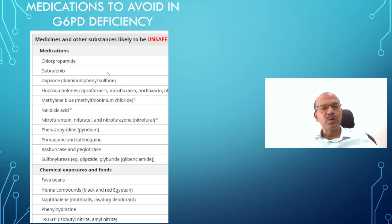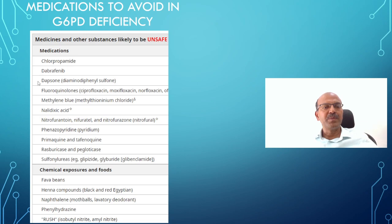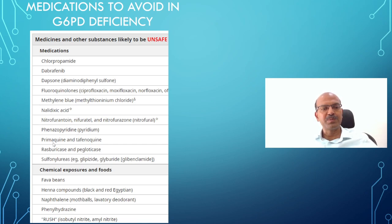The medications to avoid — taken from UpToDate — is fairly pragmatic and does not give an unnecessarily long list. It gives a list of the 'likely to be unsafe' category where you should better avoid them, or test before use if needed. Mainly fluoroquinolones, common antibiotics used in older kids and adults, as well as Dapsone, primaquine antimalarial, and sulfonylurea anti-diabetic agents.